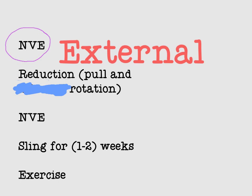To treat this condition, first we must confirm that neurovascular function is normal by performing a neurovascular examination. Then we reduce the shoulder. Reduction is achieved by reversing the mechanism of dislocation — since posterior dislocation results from adduction and internal rotation, we must externally rotate the arm.